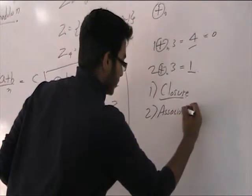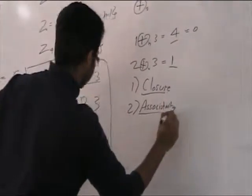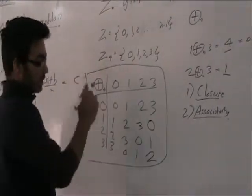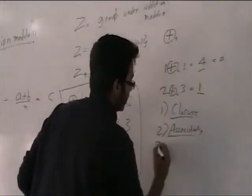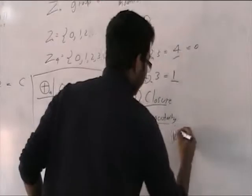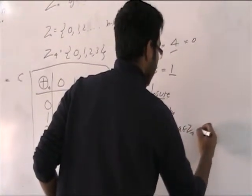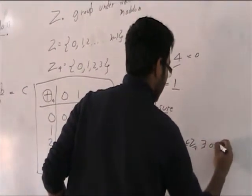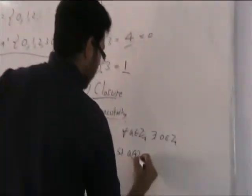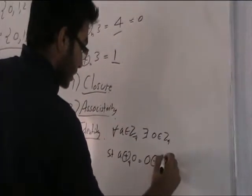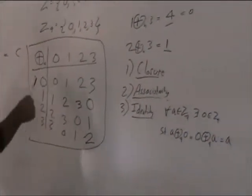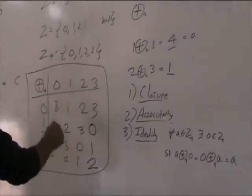Associativity — you can see that for all a, b, c: (a into b) into c is equal to a into (b into c). That can be checked and verified. Third is identity: for every a belonging to Z4, there exists 0 belonging to Z4 such that a plus 0 equals 0 plus a equals a. That can also be seen — a plus 0 is a, 0 plus 1 is 1, 0 plus 2 is 2, 0 plus 3 is 3.